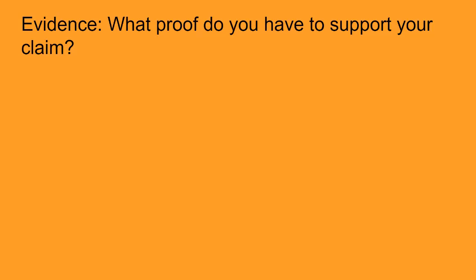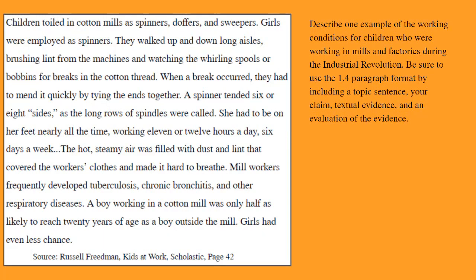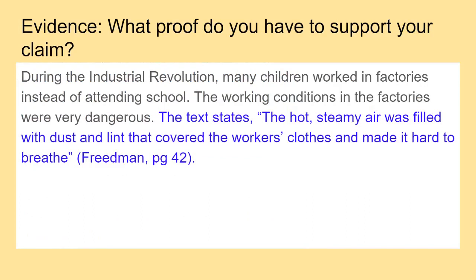Now that we've created a claim, we need to come up with evidence. What proof do you have to support your claim? This source has a ton of pieces that could serve as proof that it was dangerous to work in these factories. You could pick the fact that kids were working really long hours, which could make it dangerous, or that they could get caught in the machines and become greatly injured. It also mentions that the air is filled with dust and lint making it hard to breathe. In my opinion, the best piece is: the hot, steamy air was filled with dust and lint that covered the workers' clothes and made it hard to breathe. Notice the transition: 'The text states,' followed by a comma and quotation marks with an exact quote from the reading. Make sure you always close your quotation marks.